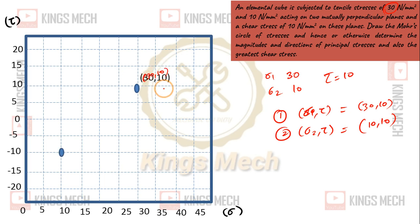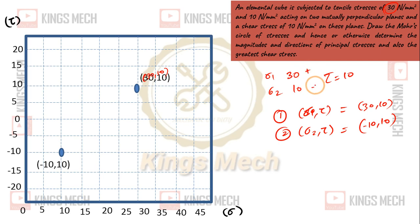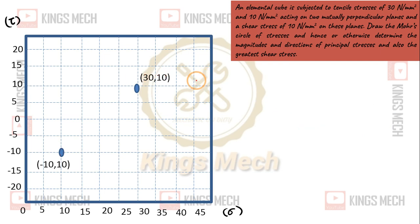After that, minus 10 — if I mark the tensile stress, if the stress is tensile it will be positive, and if compressive it will be minus. So 10 minus 10, this gives minus 10. So the two points are joined, and this joining radius is the radius of the Mohr circle.